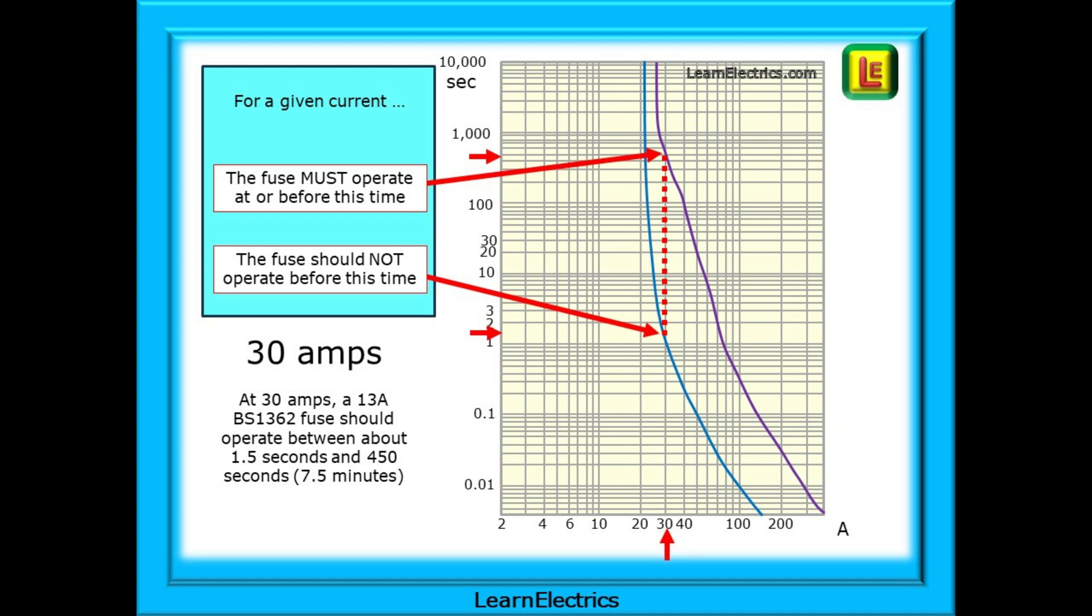What if we go the other way? What if the current was reduced to, say, just 30 amps? Where does the red line move to now? It's a lower current than 100 amps, so it moves to the left. But by moving to the left, it follows the curve up the page, up the graph, indicating a slower response time. At 30 amps, a 13 amp BS 1362 fuse should operate between about 1.5 seconds and 450 seconds, or 7.5 minutes.